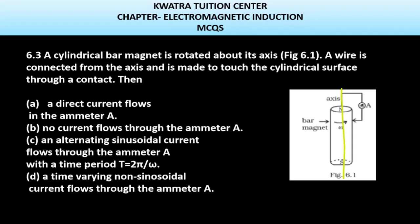A wire is connected from the axis and is made to touch the cylindrical surface through a contact. A wire is put in an ammeter where it is connected with a wire, meaning it's made a connection here. And they're asking you what changes can come in current.